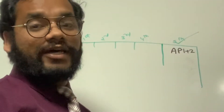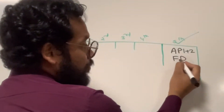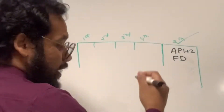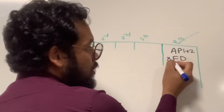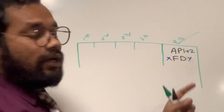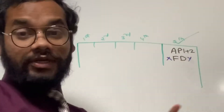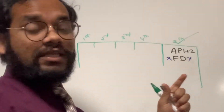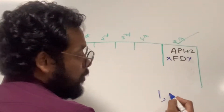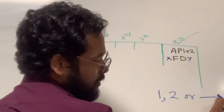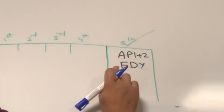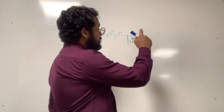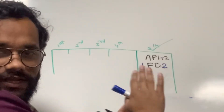Now let's discuss the FMA for the flight director system (FD). It appears as XFDY, where X and Y can be 1, 2, or dash. In the normal status of the flight director system, the FMA which appears on the PFD is 1FD2. So 1FD2 is the normal FMA that should appear.